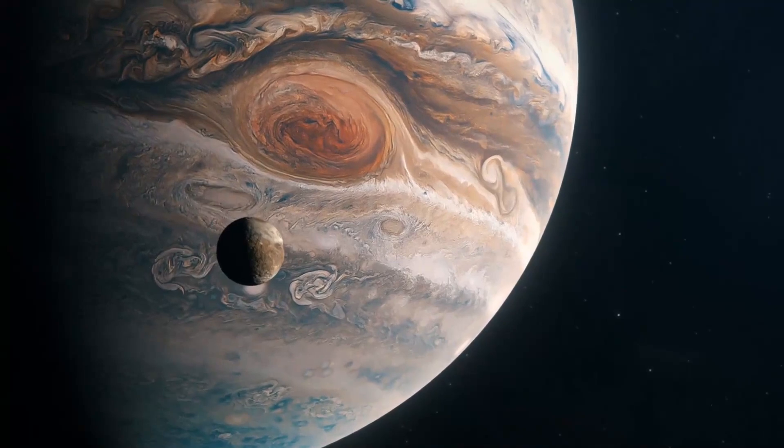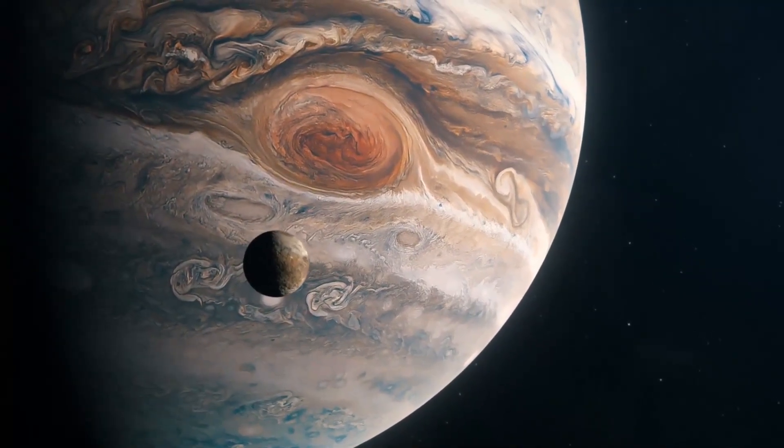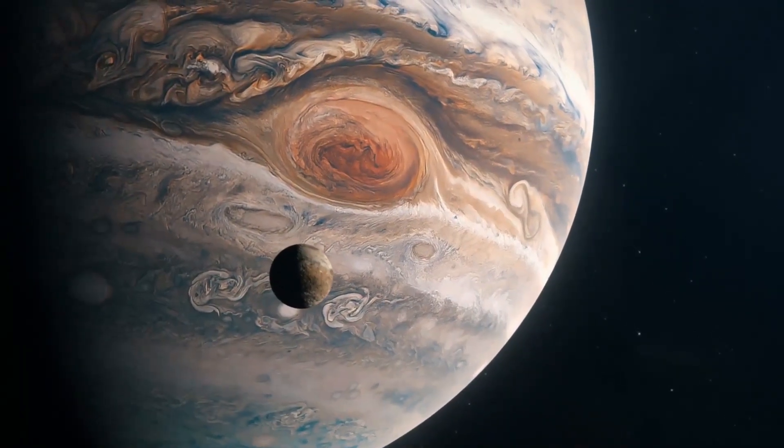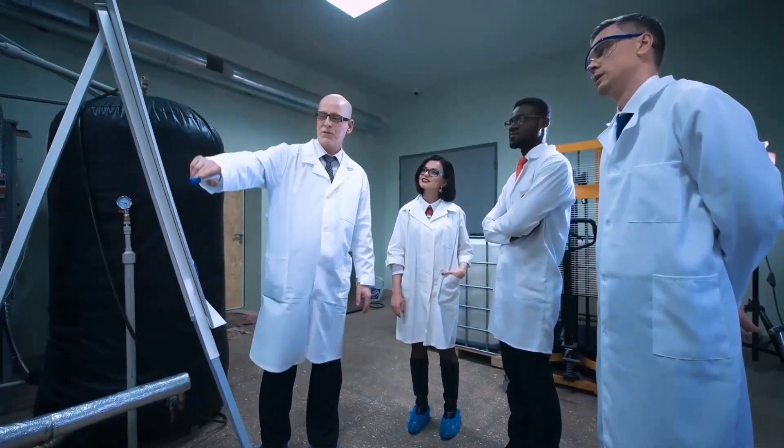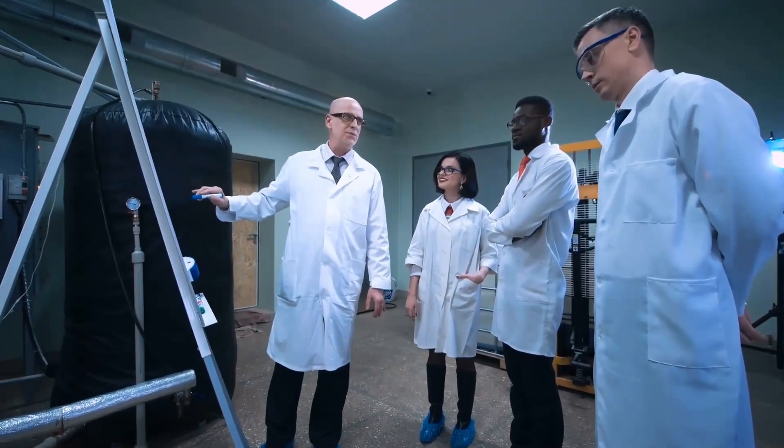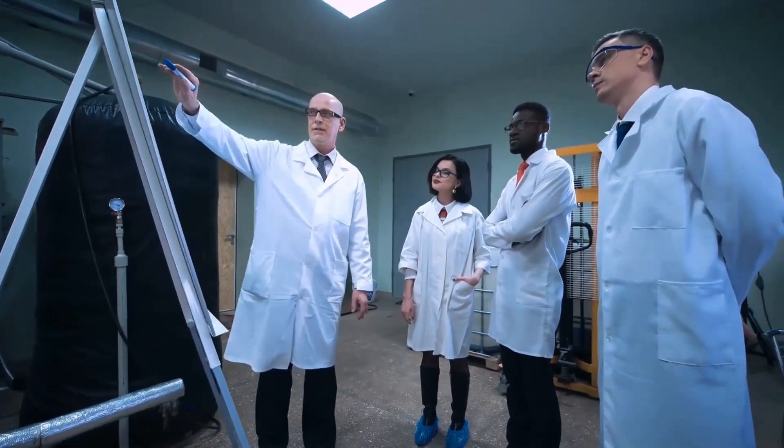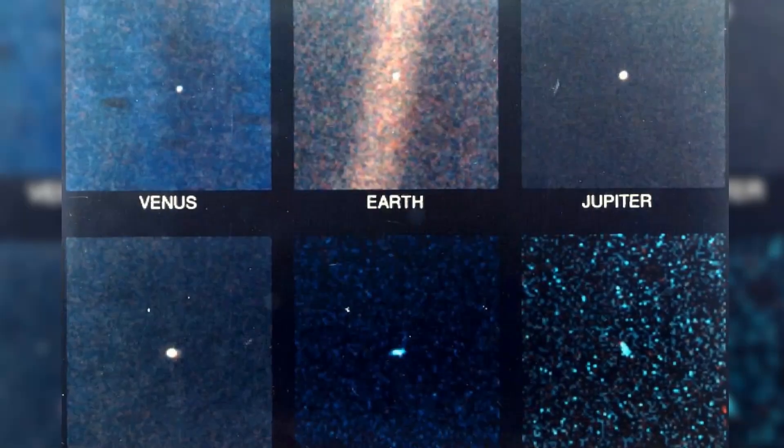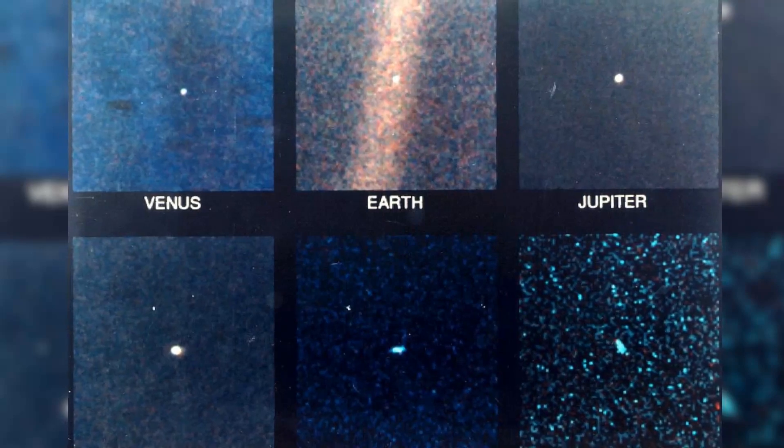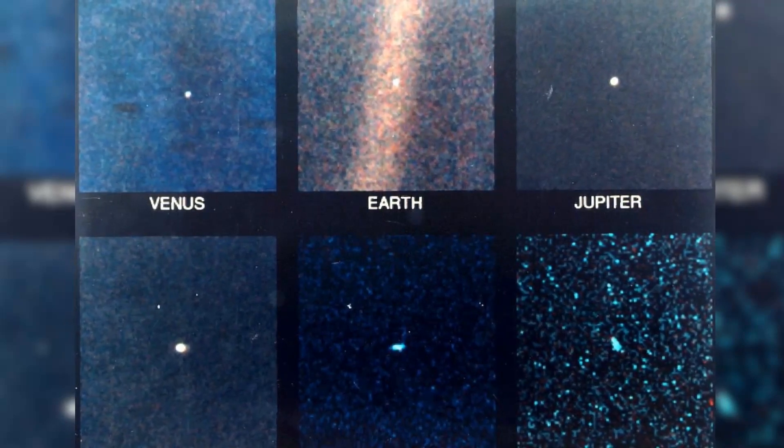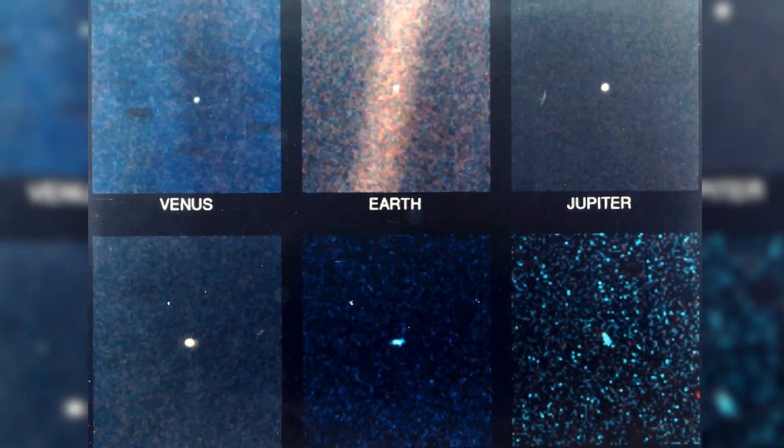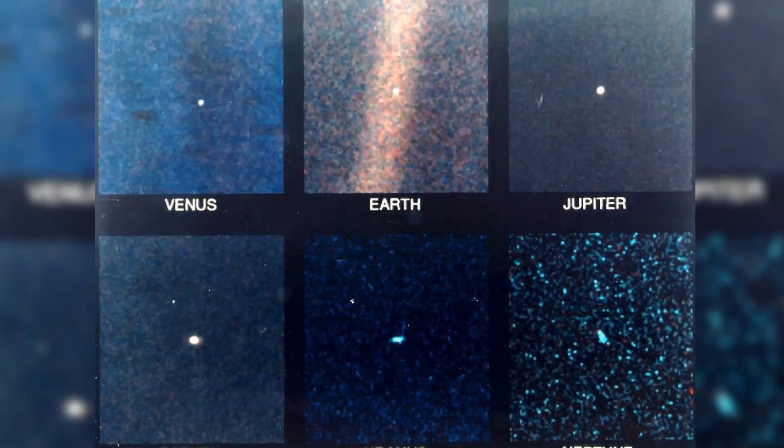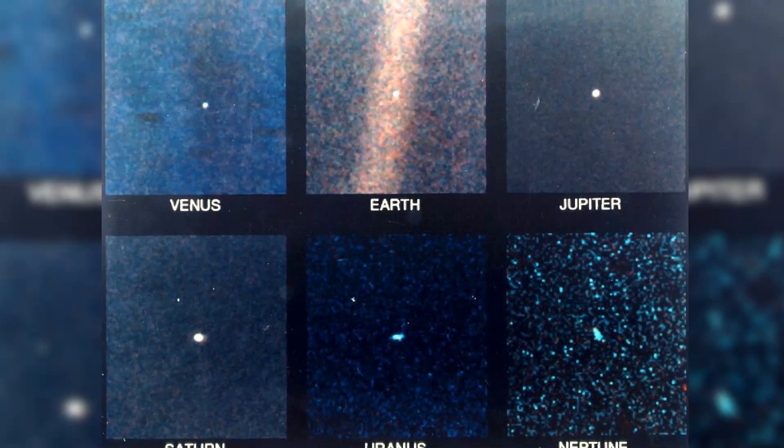Originally, the Voyager space probes were to conduct close-up studies of Jupiter and Saturn, and their larger moons. As this mission was a real success, and as the probes were in good condition, scientists decided to go and explore Uranus and Neptune. The Voyager space probes made it possible to recover a lot of data and photographs of the most distant planets, thus allowing scientists to have precise details, which were, until then, still unknown, about the four giant planets and their moons.